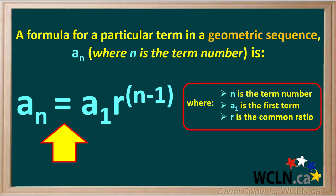So in summary, the formula aₙ equals a1 times r to the power n minus 1 is a very useful formula when we want to find a particular term in a geometric sequence. Make sure you memorize this formula and know how to use it.